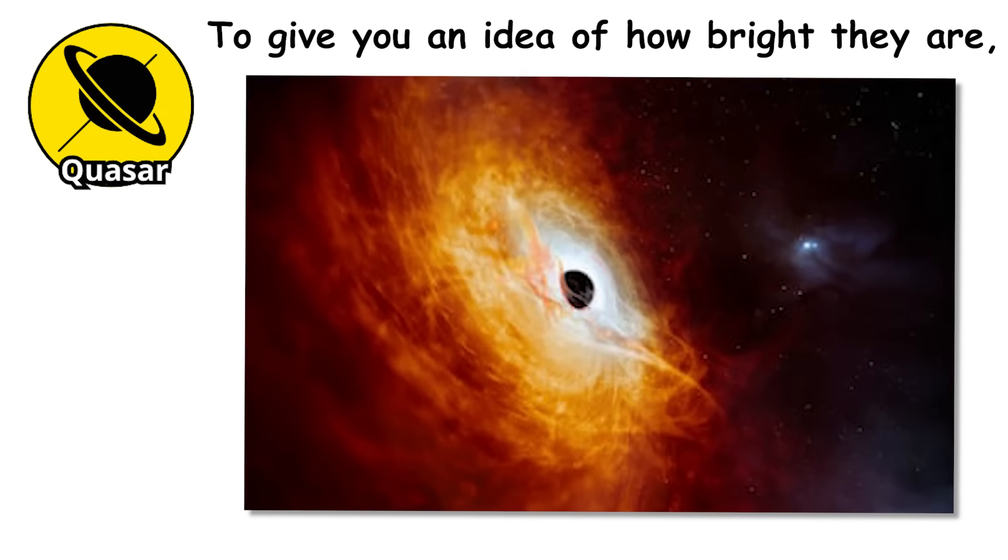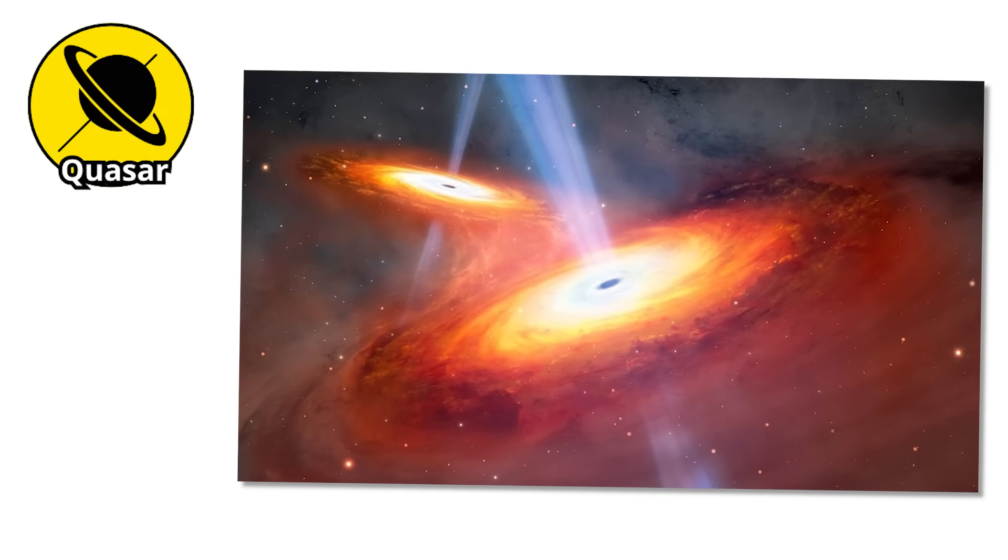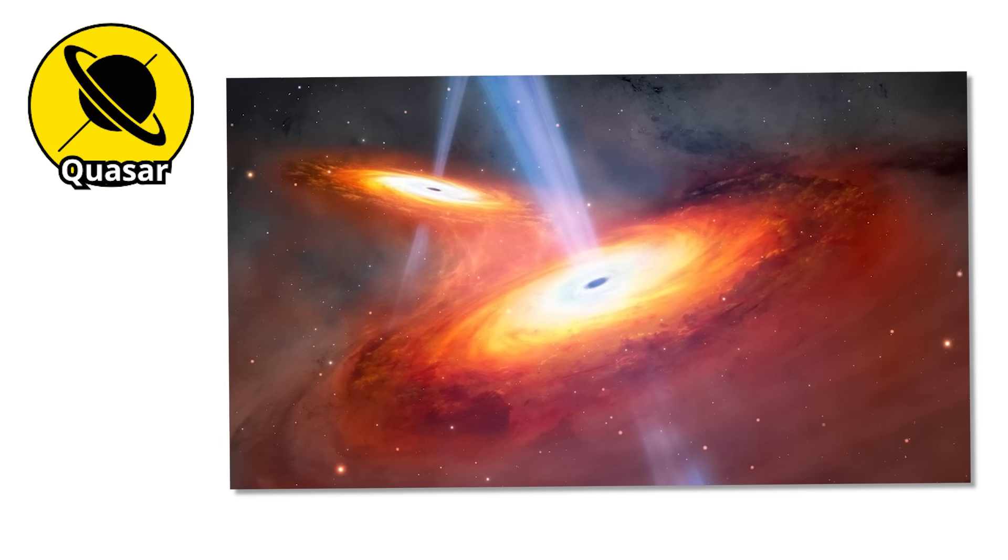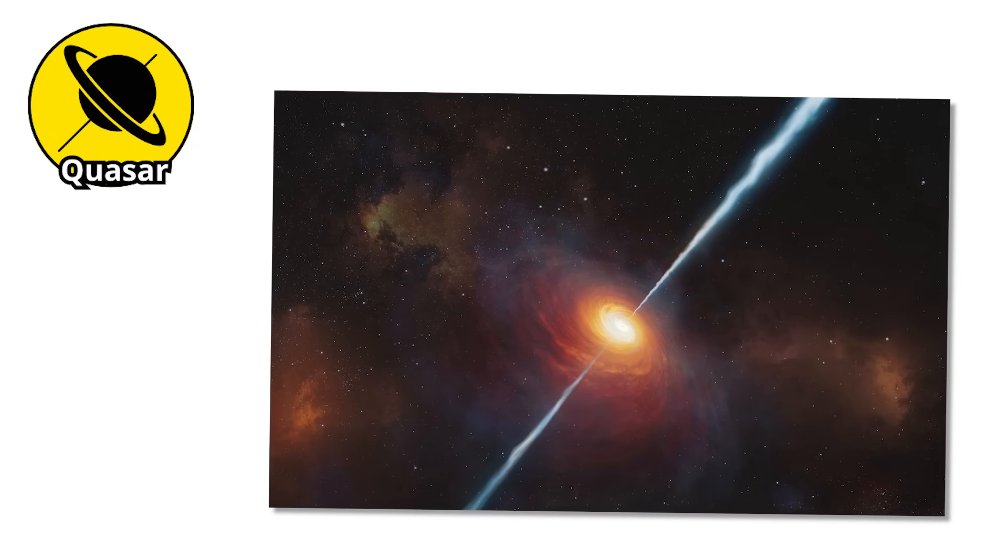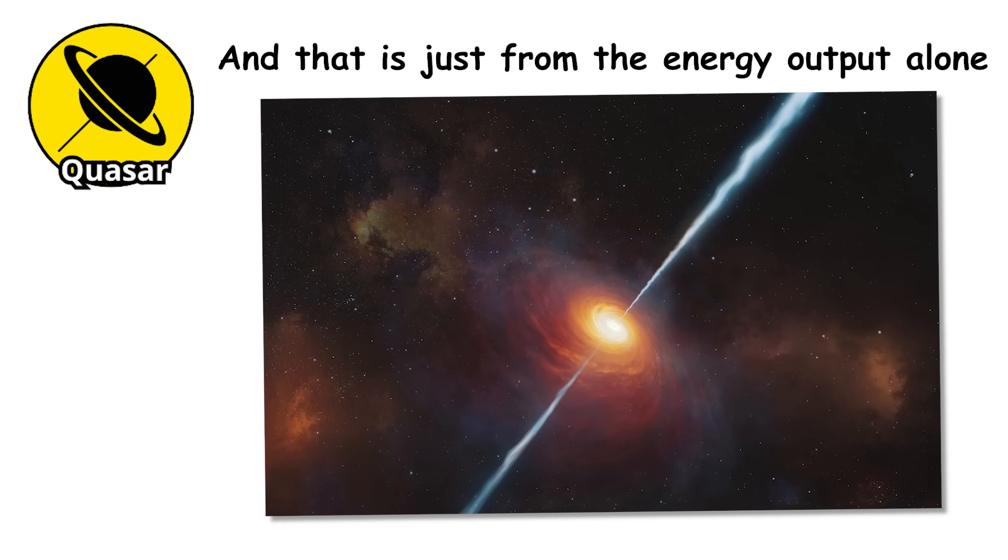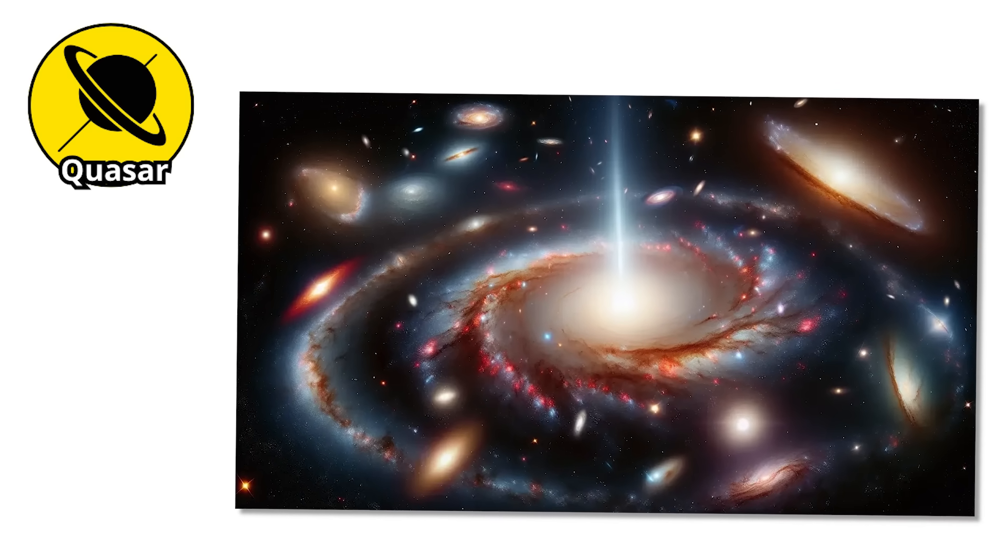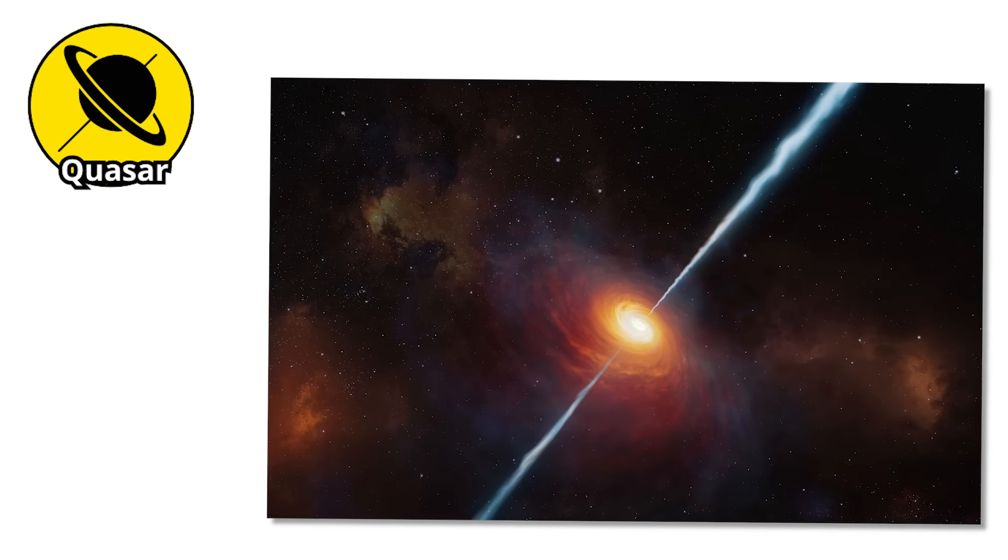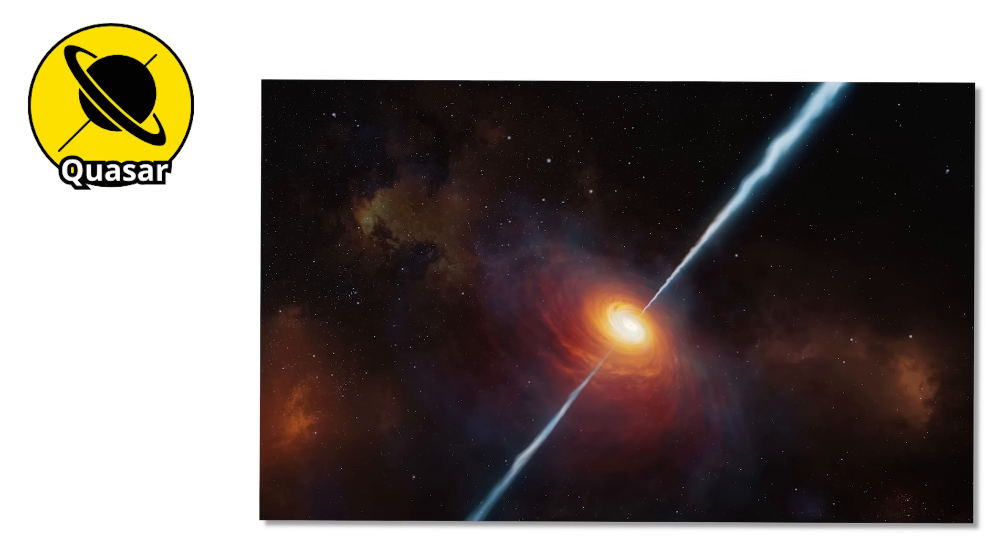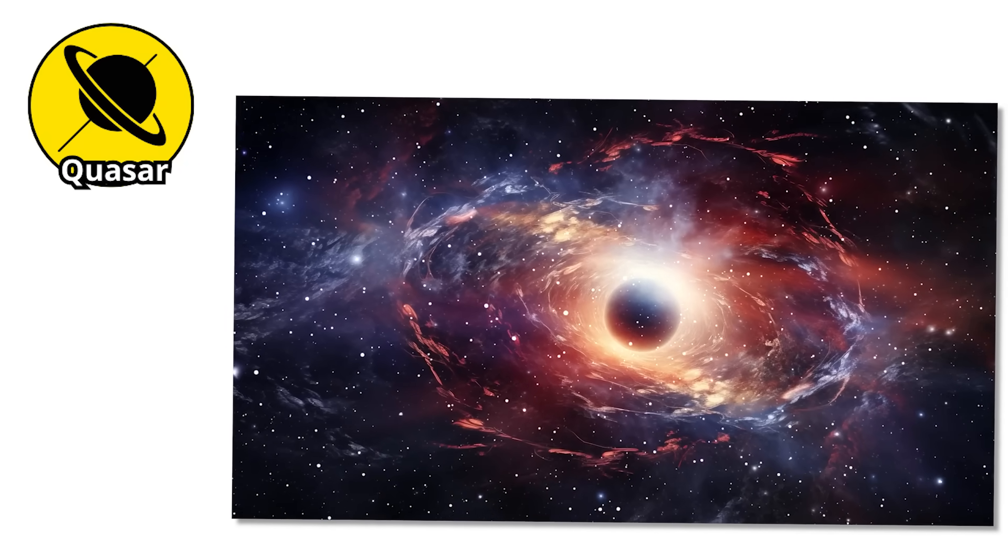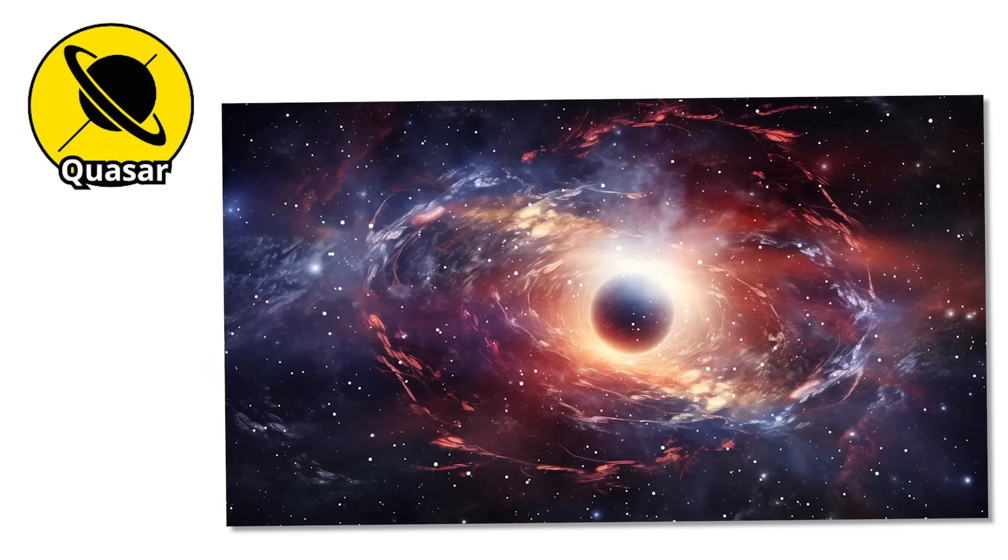To give you an idea of how bright they are, a single quasar in a galaxy billions of light-years away can outshine every other star in that galaxy combined. If a quasar took the place of our sun, Earth would be vaporized instantly, and that is just from the energy output alone. Quasars are so luminous that we have used them as cosmic lighthouses to map the distant universe. They help astronomers understand the shape and expansion of space itself.